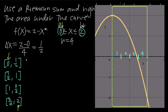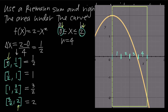Because we're asked to use right endpoints, we take the right-hand side of each interval: 1/2, 1, 3/2, and 2. If we were using left endpoints, we'd take 0, 1/2, 1, and 3/2. If using midpoints, we'd take values halfway between each pair of endpoints, such as 1/4 and 3/4. But we're using right endpoints, so we take those right-hand values.